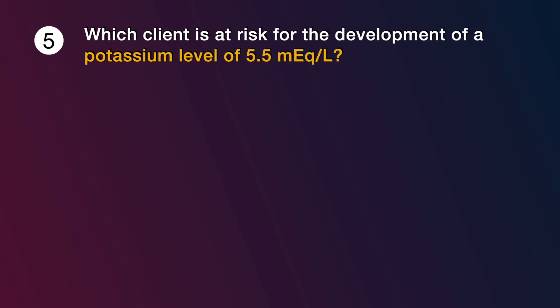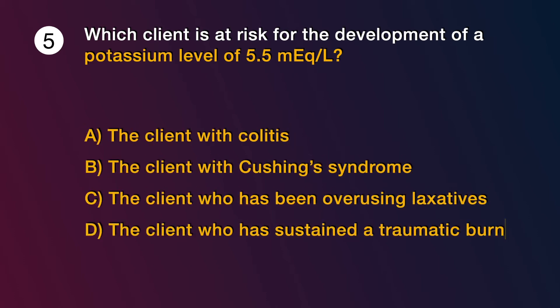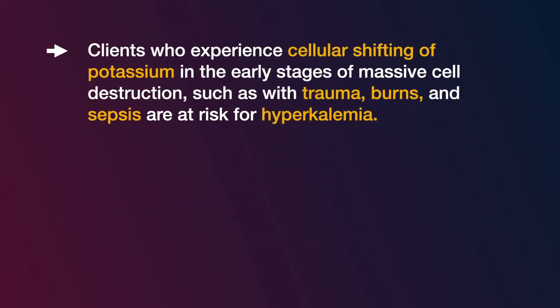Question number 5: Which client is at risk for development of a potassium level of 5.5 milliequivalents per liter? Options are: A) the client with colitis, B) the client with Cushing syndrome, C) the client who has been overusing laxatives, D) the client who has sustained a traumatic burn. The answer is D, the client who has sustained a traumatic burn. Clients who experience cellular shifting of potassium in the early stages of massive cell destruction, such as with trauma, burns, and sepsis, are at risk for hyperkalemia. Clients with Cushing syndrome, colitis, or laxative overuse are at high risk for hypokalemia.